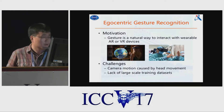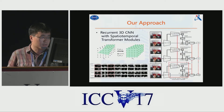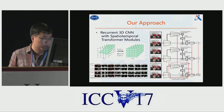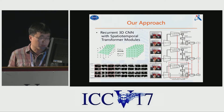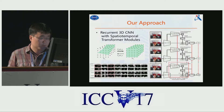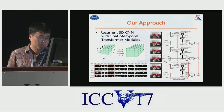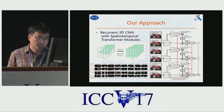we propose recurrent 3D CNN models in which we design special temporal transformer modules with recurrent connections between neighboring time slices. It can predict transform parameters and use them to construct a sampling grid, which is a set of points where the source feature map should be sampled, to generate the target transformed feature map.